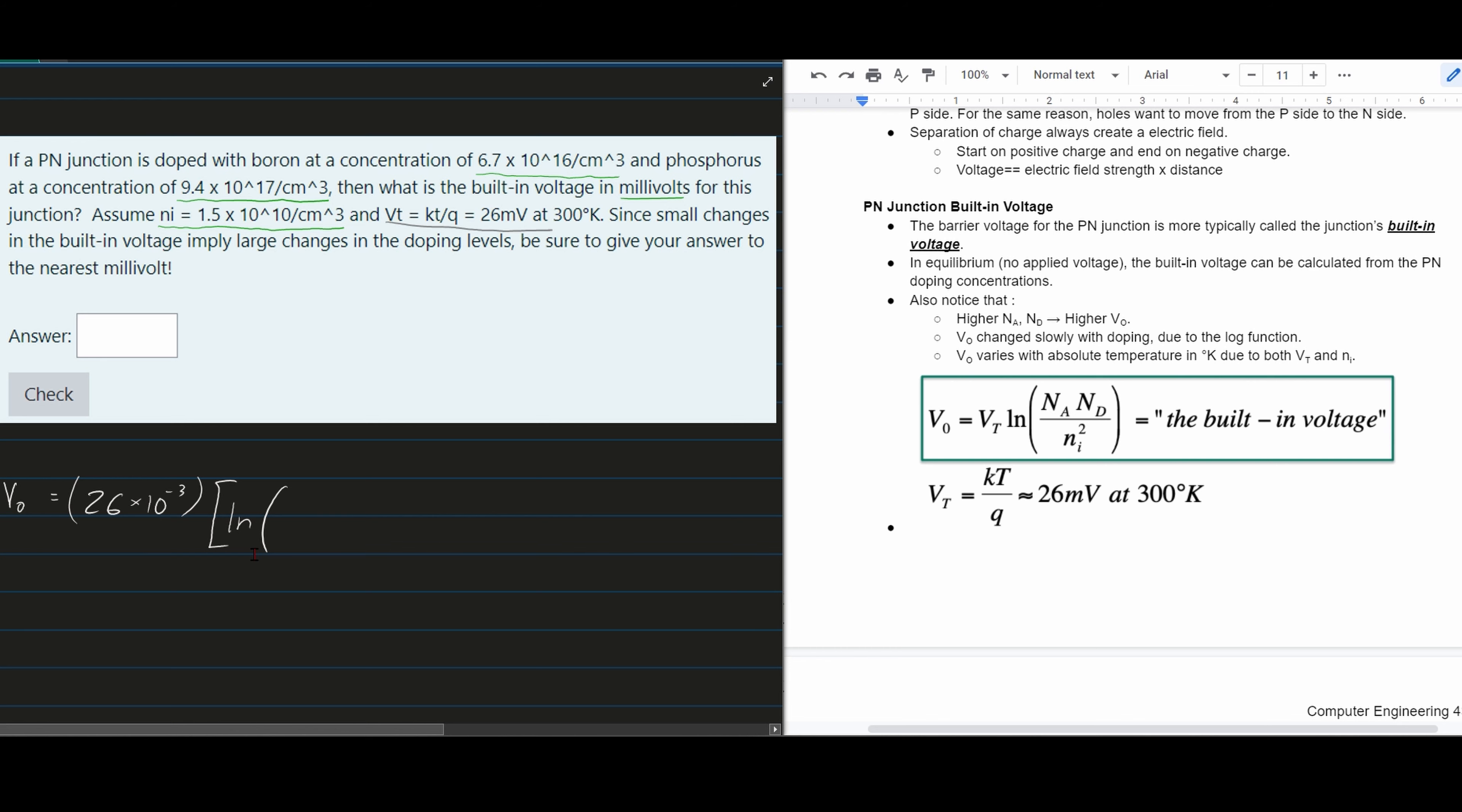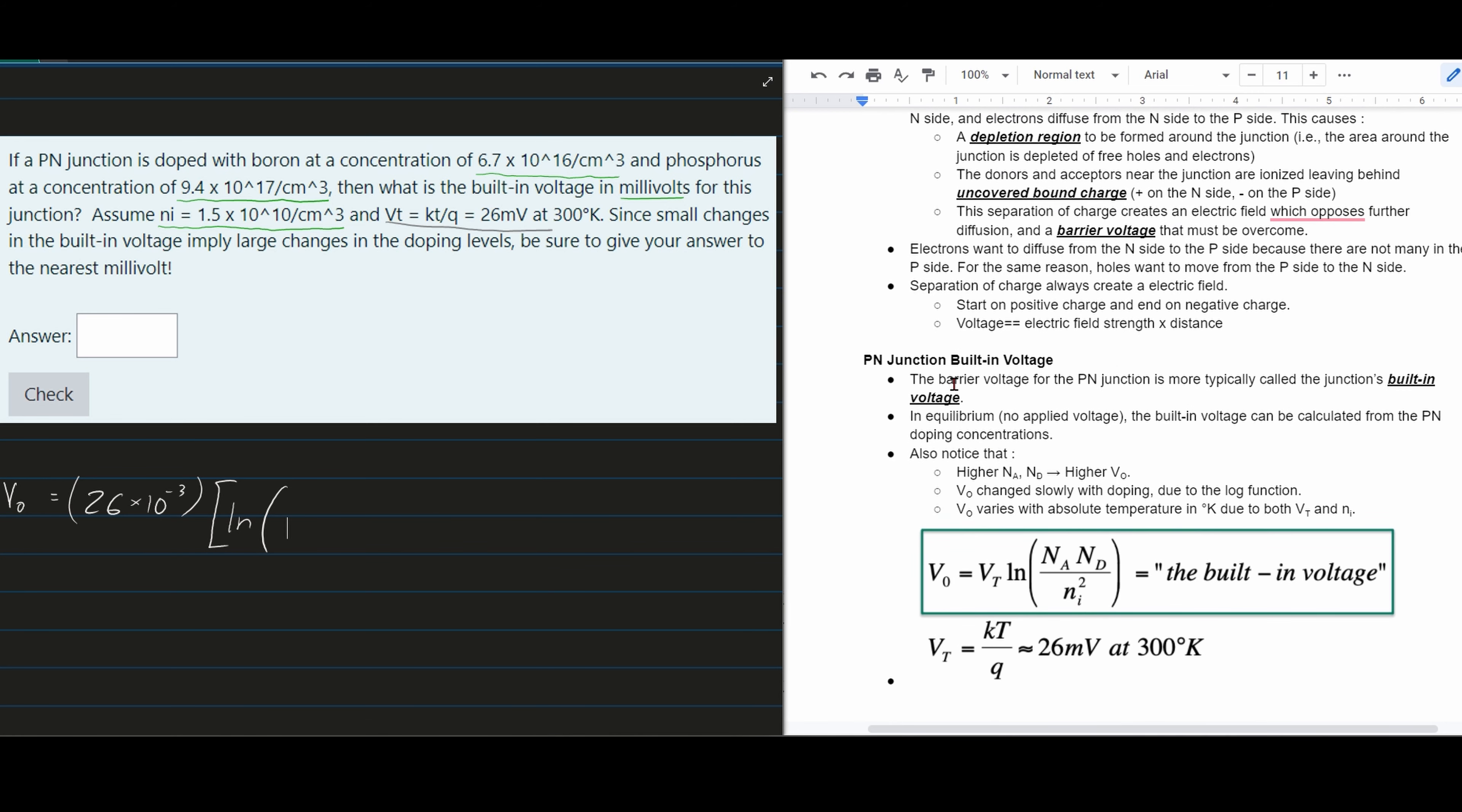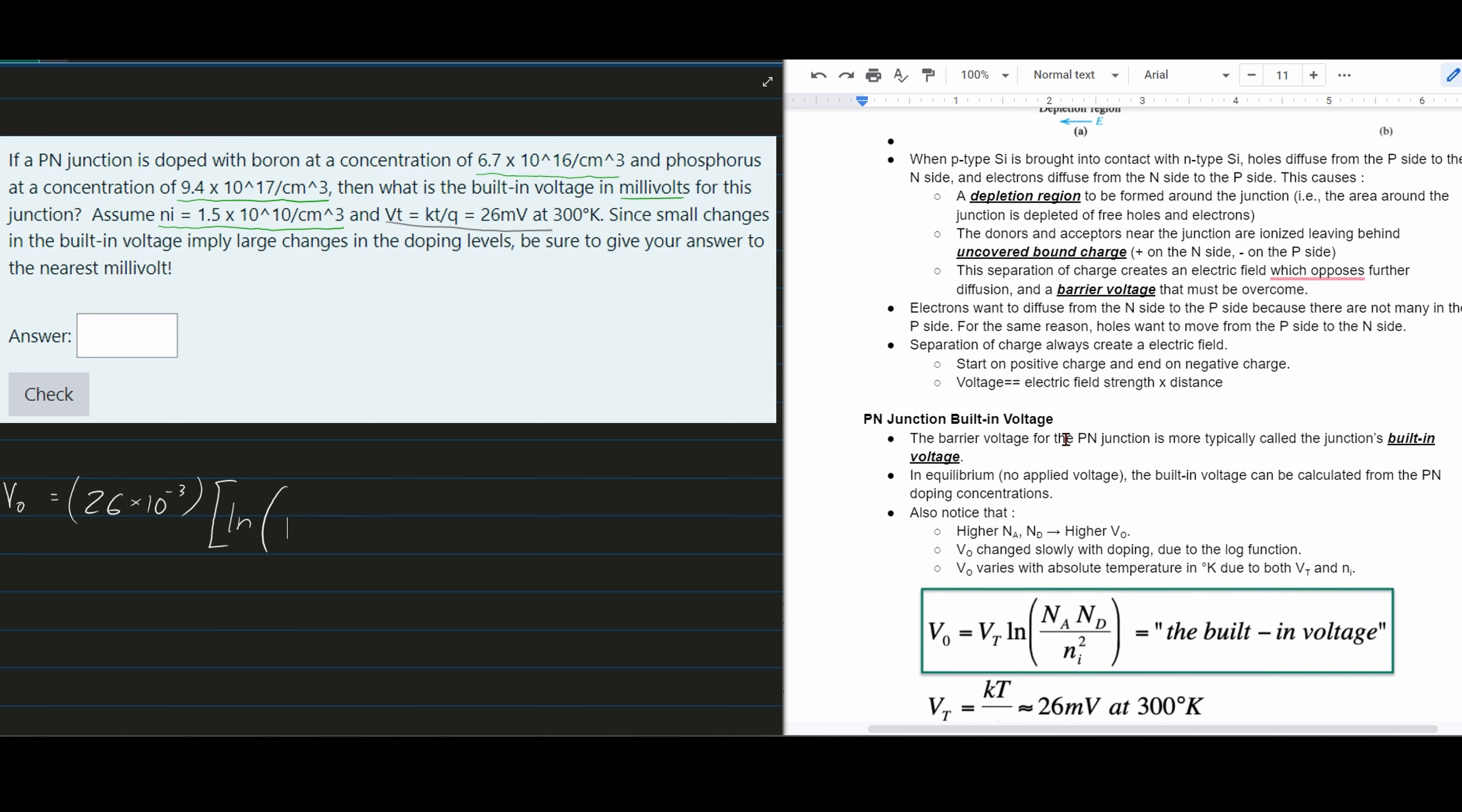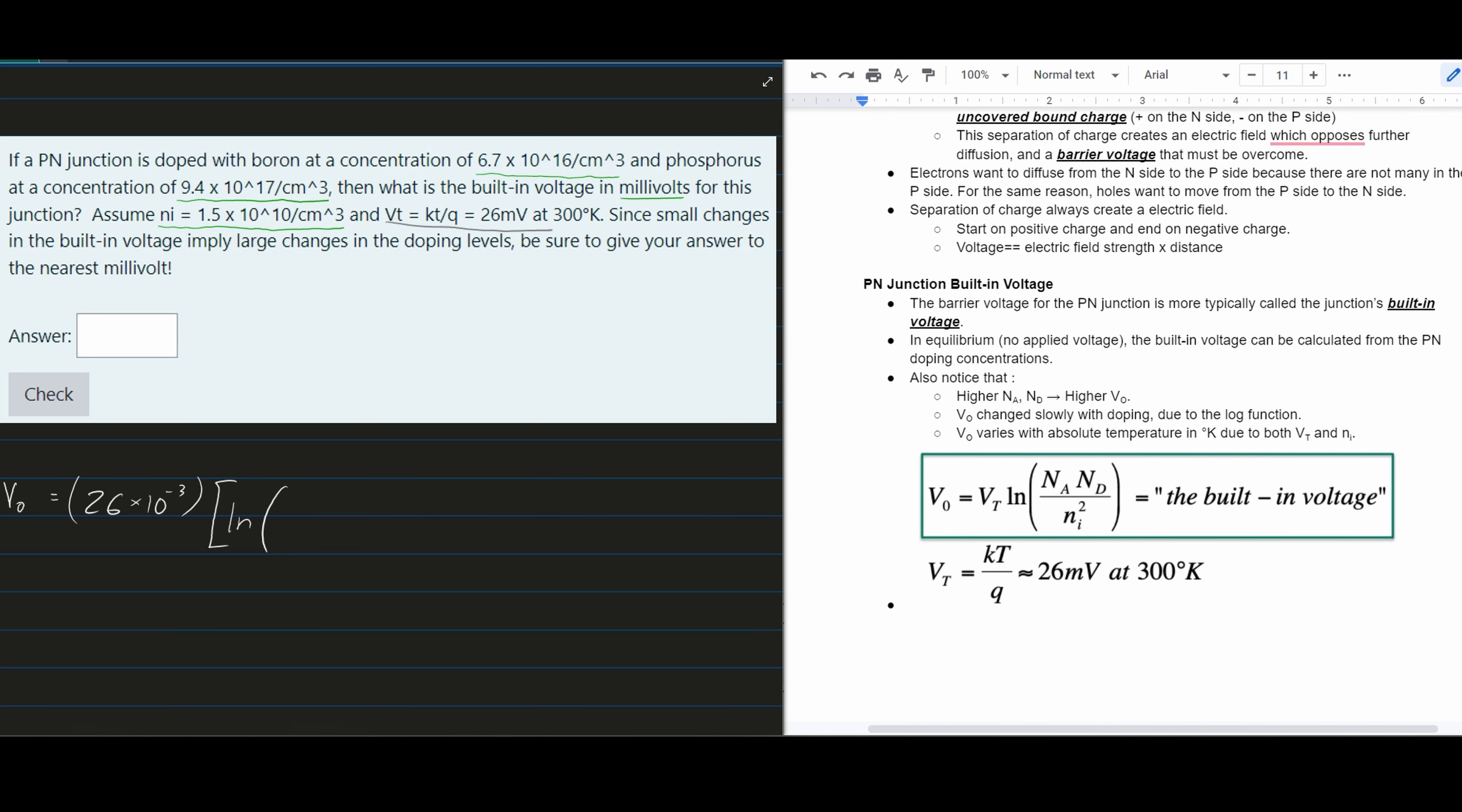We can find our Na and Nd values from the problem statement. Na is 6.7×10¹⁶ per cm³.